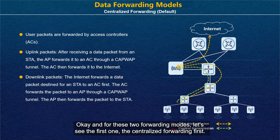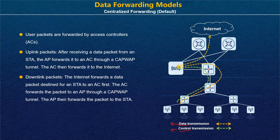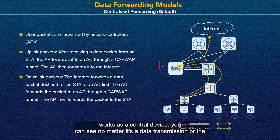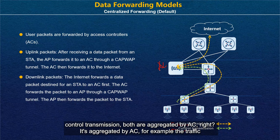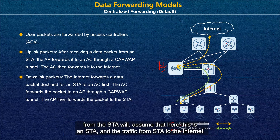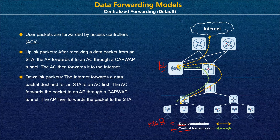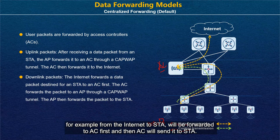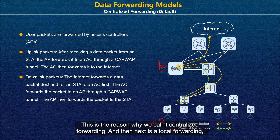For the first model — centralized forwarding — the AC works as a central device. No matter whether it is data transmission or control transmission, all traffic is aggregated by the AC. For example, traffic from STAs to the internet is forwarded to AC first, and then AC sends it to the internet. Likewise, incoming packets from the internet to STAs are forwarded to AC first, and then AC sends them to the STA.